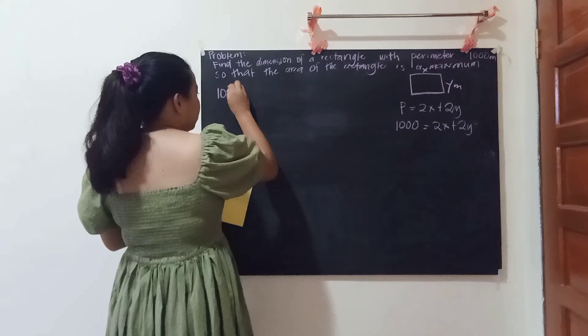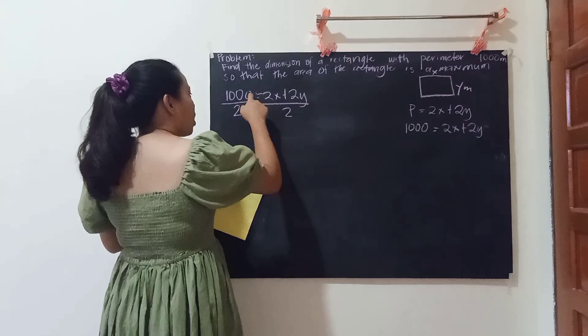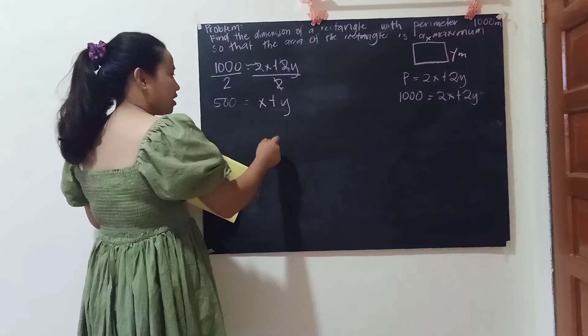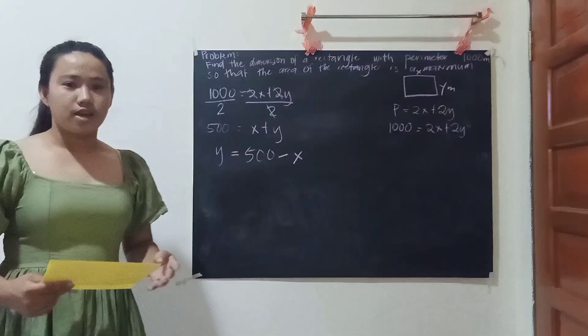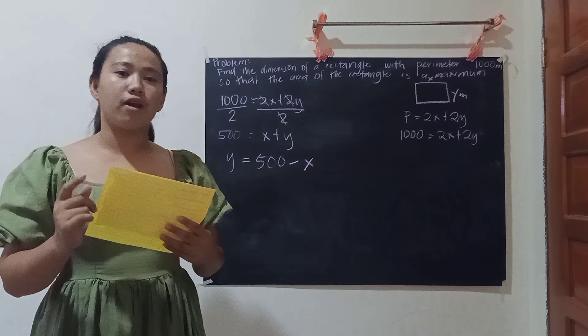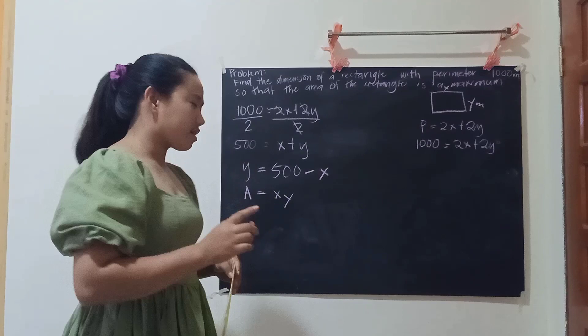Divide both sides by 2: 500 equals x plus y. Transpose x, so we have y equals 500 minus x. Then we will use the formula for solving the area of a rectangle: A equals x times y. So A(x) equals x times (500 minus x).